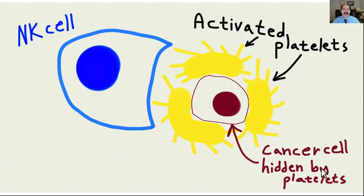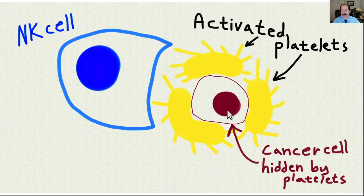This video covers why activated platelets increase cancer. The platelets are the yellow cells, and the maroon/reddish cell is a cancer cell. When cancer cells break into the circulation and into the blood vessels, they are often surrounded by activated platelets.